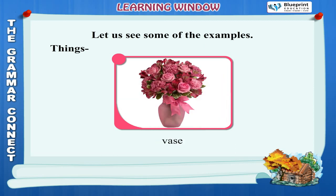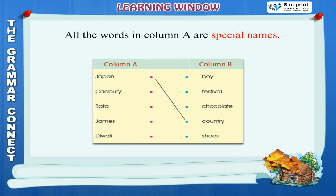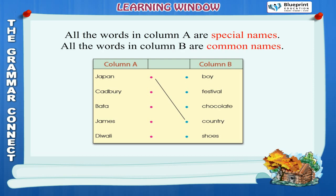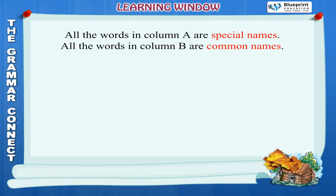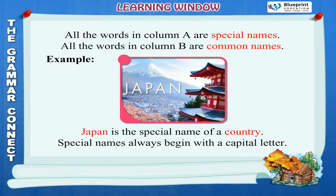Vase. All the words in column A are special names. All the words in column B are common names. Example: Japan is the special name of a country. Special names always begin with a capital letter.